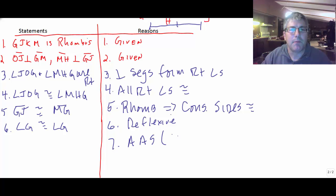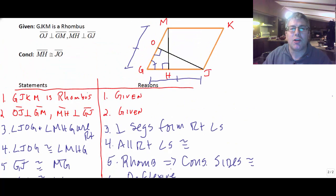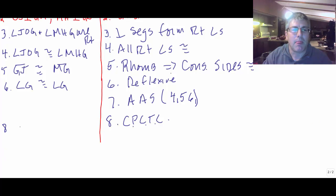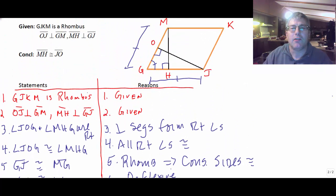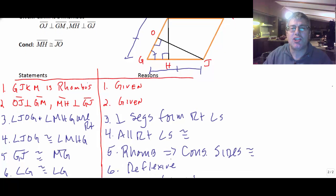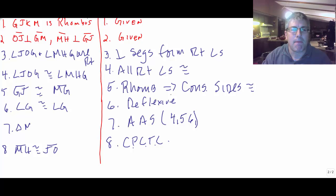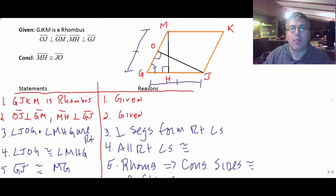And that is steps four, five, and six. And then finally, our proof, final reason to get segment MH congruent to JO is CPCTC. And let me go back and put my congruent triangles in. Again, it's triangle MGH, the upright triangle, is congruent to triangle JGO.